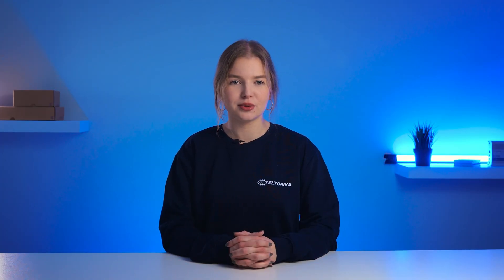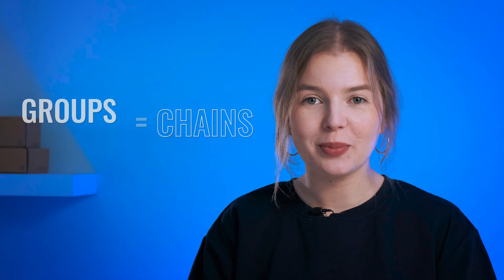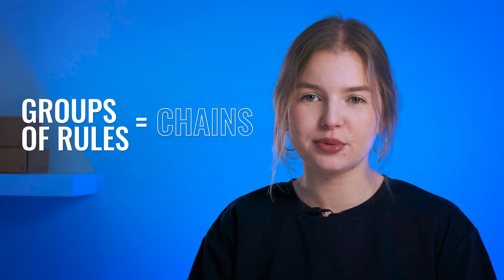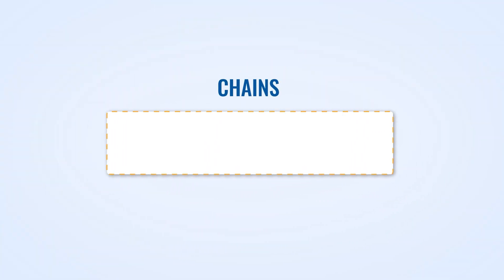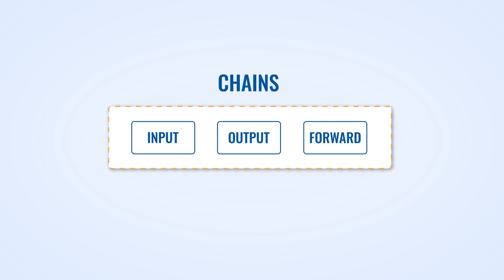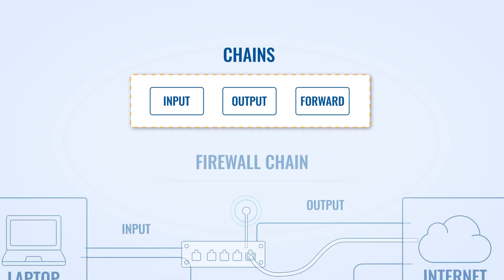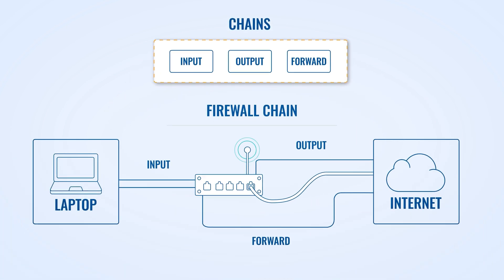But to understand the firewall even better, we need to get a more technical perspective. Let's go back and talk about these pre-configured rules in more depth. When configuring a firewall, you may encounter predefined groups of rules known as chains. Usually there are three standard chains – input, output, and forward. These chains define what your network's firewall will do with incoming and outgoing packets.